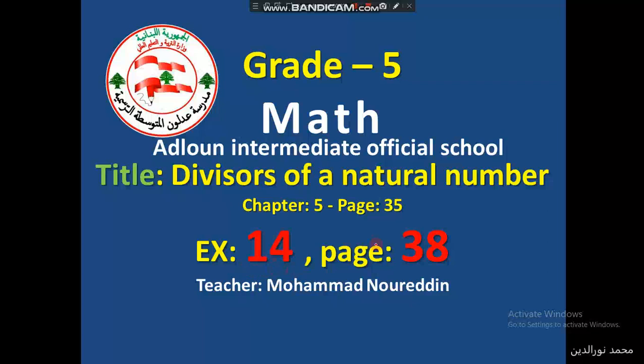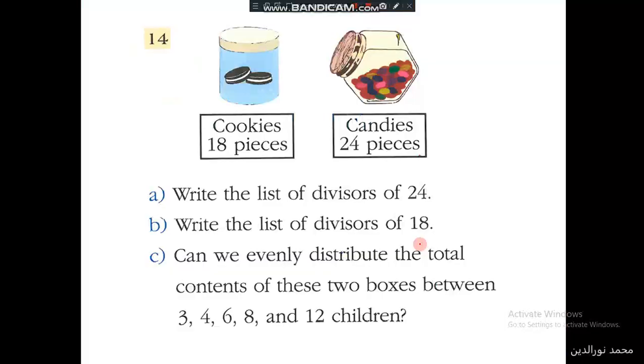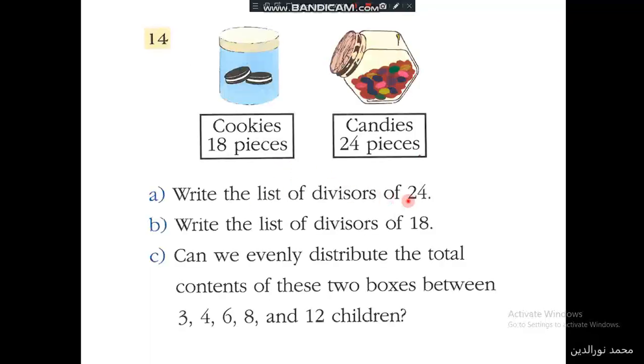Exercise 14 on page 38. We have 18 cookies and 24 candies. In the question, we have to write the lists of divisors of 24 and 18. So let's start. Divisors of 24 and divisors of 18.